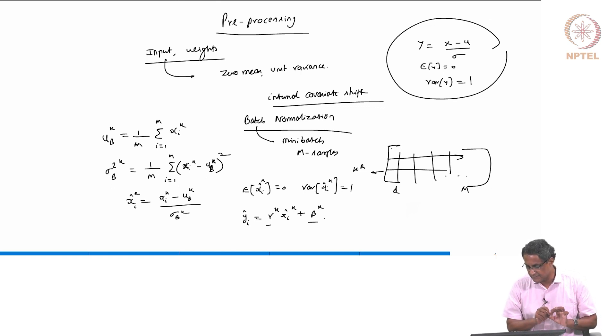But the idea behind using gamma and beta is that if the network believes that x_i_hat is the best, it will take that. If it believes that x_i is the best, it will take that. If it believes something else is best, it will then find gamma and beta_k accordingly. So, that is the thing about batch norm.